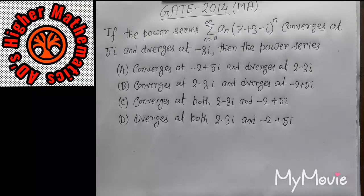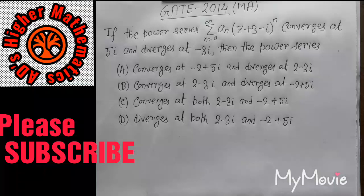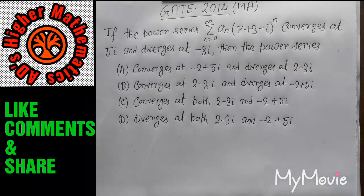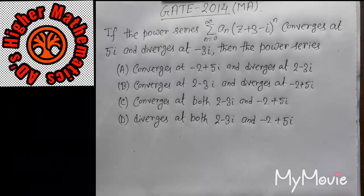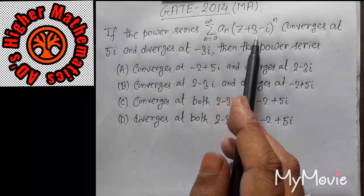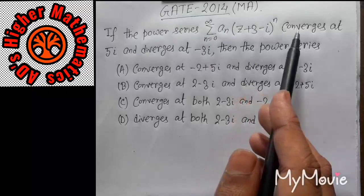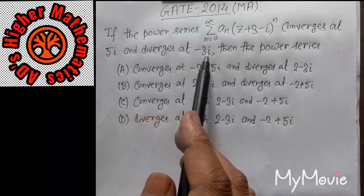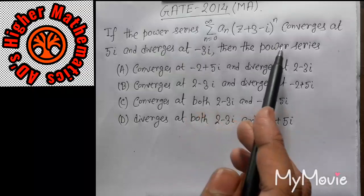Hello friends, I am Arjeej Das, welcome to ADI's Higher Mathematics. Today I will discuss a question from GATE 2014. The question is: if the power series summation n equals 0 to infinity of Z plus 3 minus i, all to the power n, converges at 5i and diverges at minus 3i, then the power series...